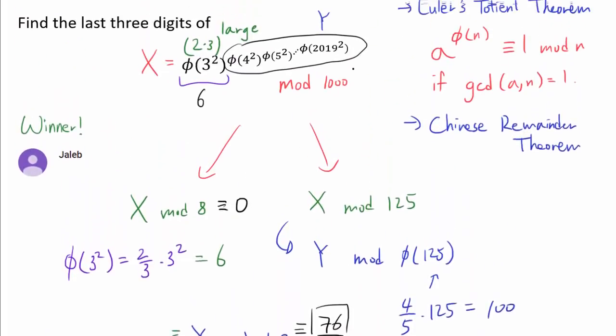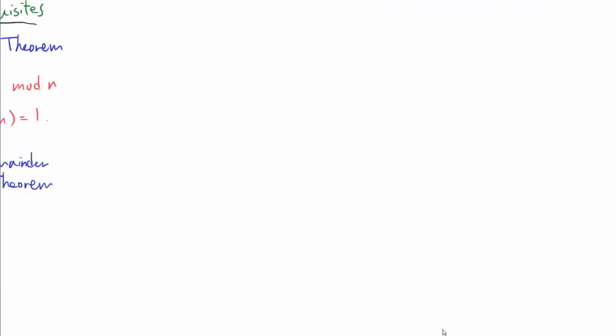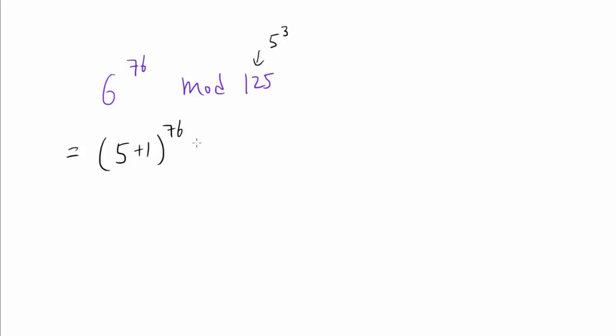Going back up, we have found that Y mod phi of 125 is 76. So X mod 125, the final ingredient that we really need, is 6 raised to the 76th power. So everything really boils down to having to compute 6 to the 76 mod 125. But this is relatively easy because 125 is 5 cubed. And we can write 6 as 5 plus 1. And once we apply the binomial theorem to this, every factor is gonna go away except 76 choose 2, 5 squared, plus 76 choose 1, 5, plus 1.